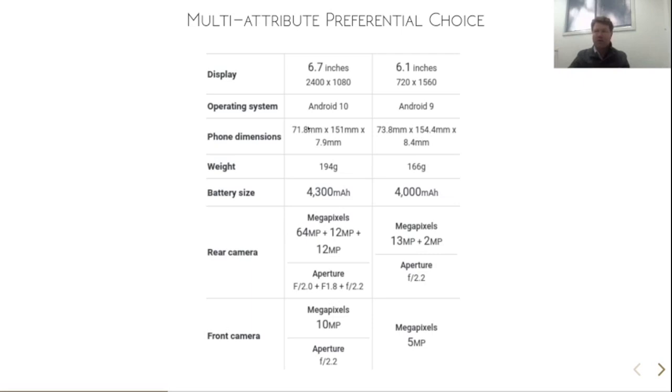So in this case here, we've got two different phones that vary along a number of different attributes: the display size, the battery size, the camera quality, and presumably also their price and maybe brand as well.